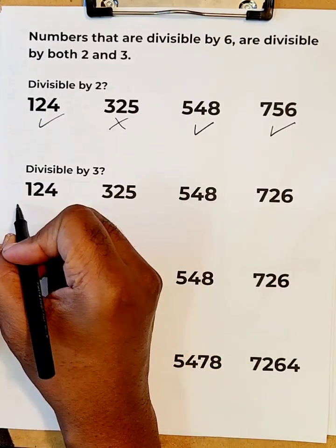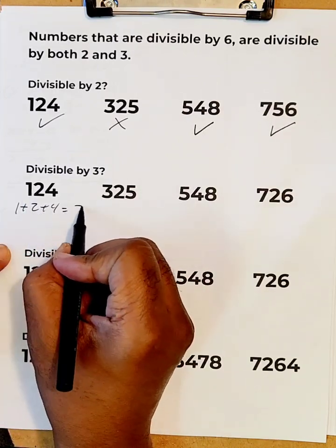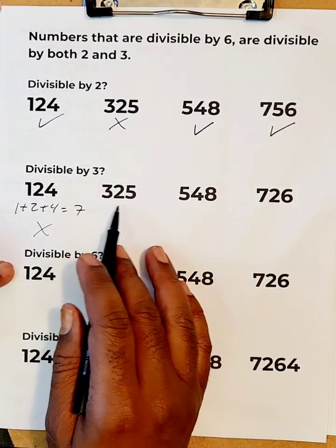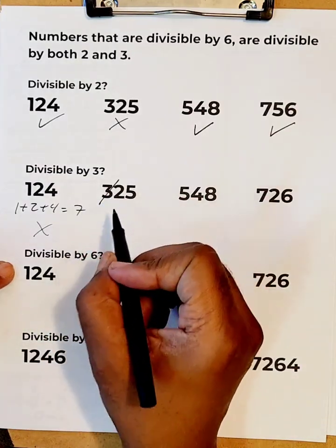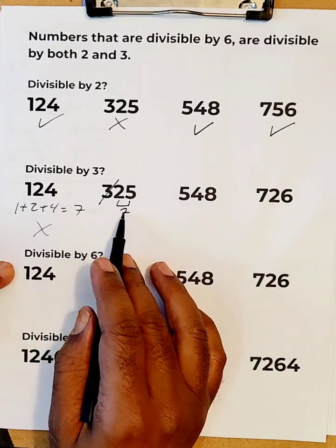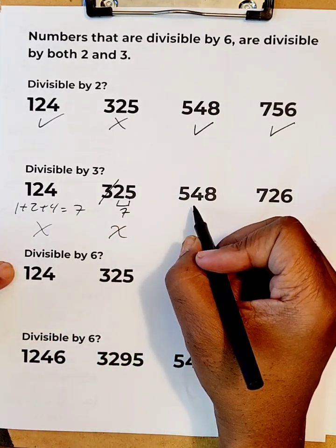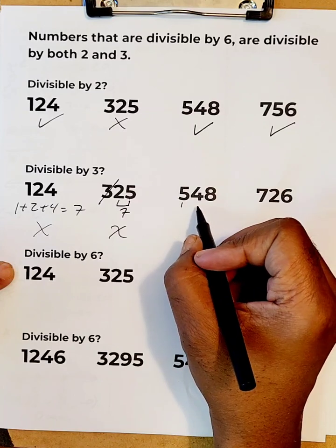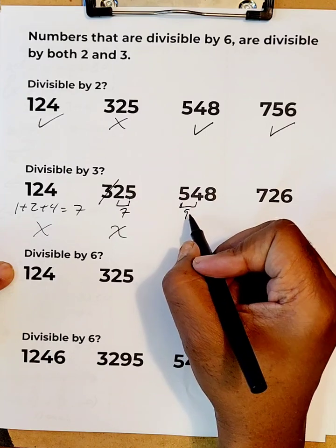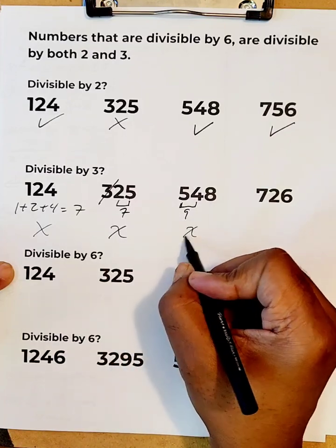To be divisible by three, we have to add the digits. 1 plus 2 plus 4 adds up to 7, so 224 is not divisible by three. For 325, adding 2 plus 5 gives 7, which is not divisible by three, so 325 is not divisible by three. For 548, adding 5 and 4 gives 9, but 8 is not divisible by three, so this number is not divisible by three.